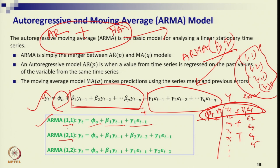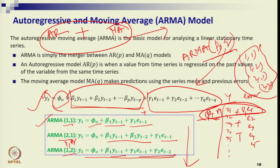For ARMA(2,1), p=2 and q=1, so you consider two past lags and one error term. For ARMA(1,2), you consider one past data point and two error terms. Since it is a linear combination, you must also optimize the weights beta1 and gamma1, as well as the coefficient part, just like in the MA process.